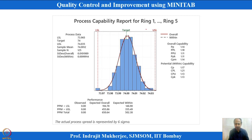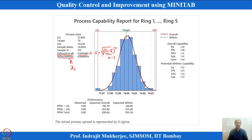This is the process capability index we have seen. Minitab reports standard deviation within — calculated using the subgroup formula — and standard deviation overall, which is basically the sample standard deviation S: the square root of the sum of (X minus X-bar) squared divided by N minus 1.